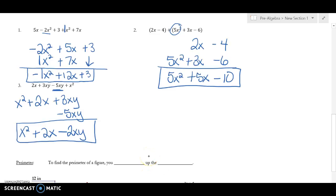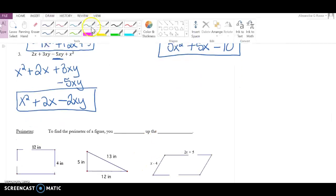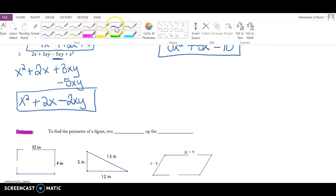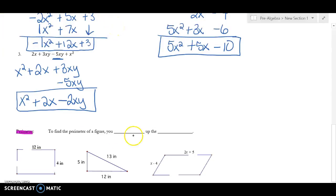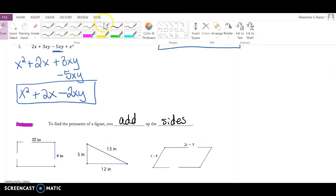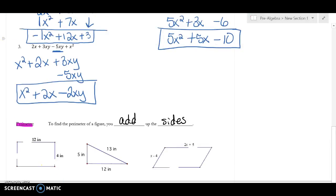All right, now sometimes you're going to have problems that are asking you to find a perimeter. So the first thing we need to do is even remember what perimeter is. And remember, perimeter is just the distance around the figure, so you add up all the sides.